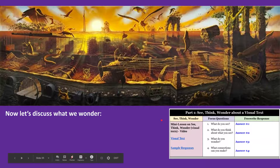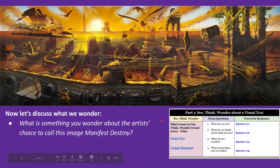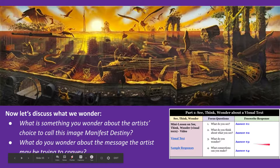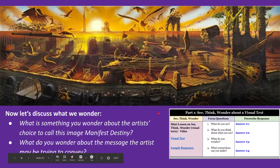Going back to our assignment: let's discuss what we wonder. What is something you wonder about the artist's choice to call this image 'Manifest Destiny'? What do you wonder about the message the artist may be trying to convey in this picture? Your answer to number three — 'what do you wonder' — can be either a statement answering one of those questions or your own question about what you'd like to know more about. Please pause the video and answer the question now.